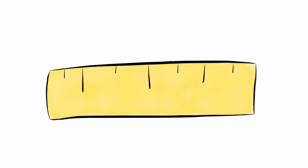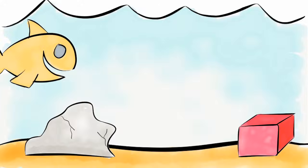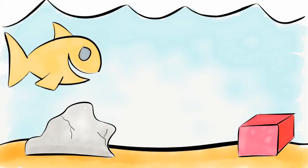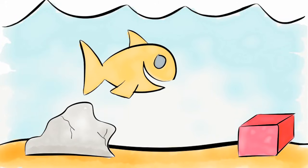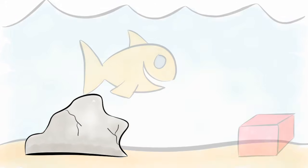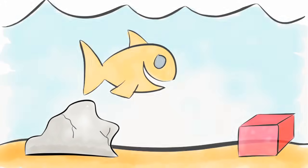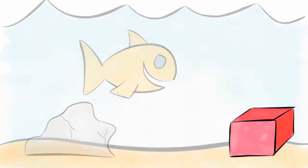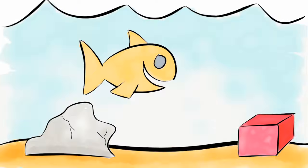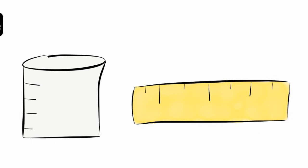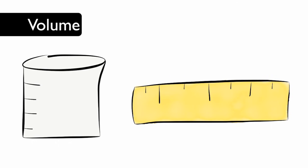Volume is the measure of the amount of space an object takes up. In a fish tank, we can find out what takes up more space: the rack or the filter. We need to measure the volume of both objects.